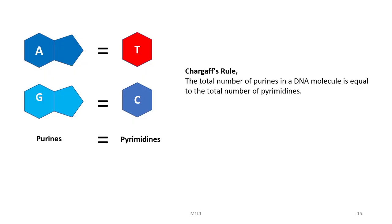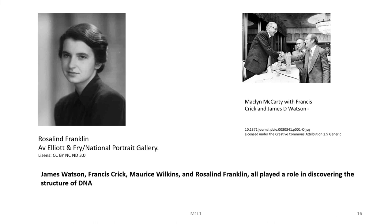Chargaff's work provided firm evidence to disprove the prevailing tetranucleotide hypothesis by Levene. Chargaff's rule is quite simple: the total number of purines in a DNA molecule is equal to the total number of pyrimidines. From the figure you can see purines: A equals T and G equals C. This is one of the fundamental principles we must remember whenever we study the structure and function of the DNA molecule.